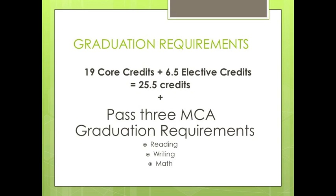When you add the core and elective credits, you will need to have earned a total of 25.5 credits. In addition to the credits, students must pass three MCA-II graduation tests administered by the state of Minnesota. Those tests are reading, writing, and math.